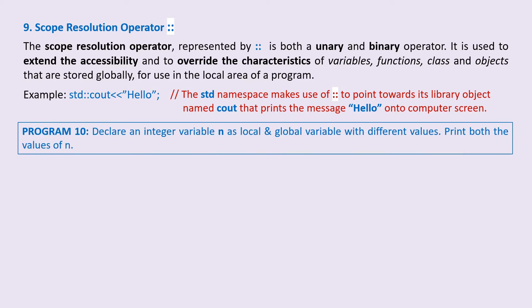Program 10: Declare an integer variable n both as local and global variable with different values. Print both the values of n.